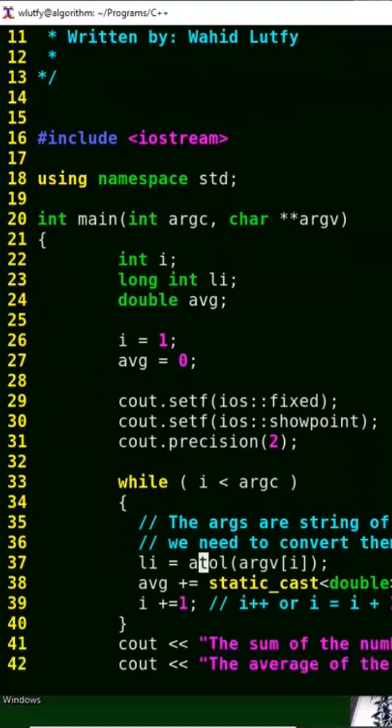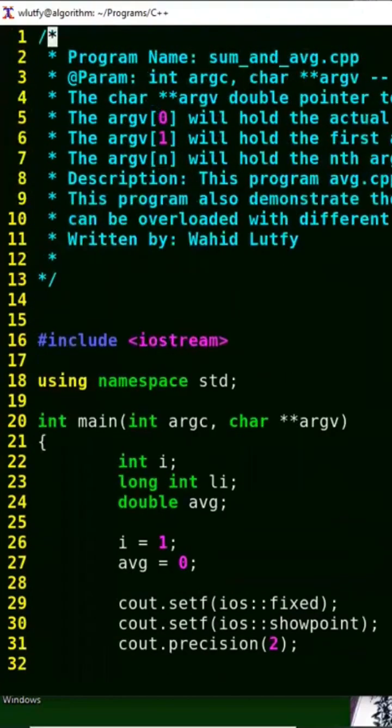And while I'm doing this, while i is less than argc, in this case, the first argument is passed on to the name of the program right here. It's an average.